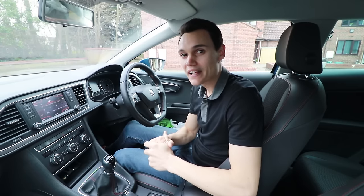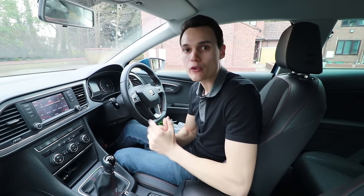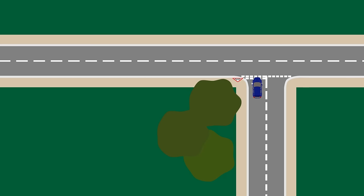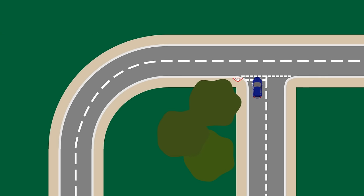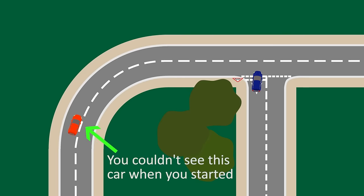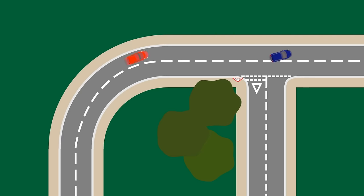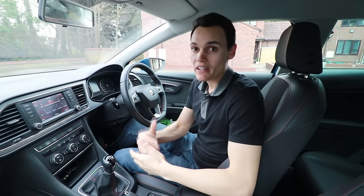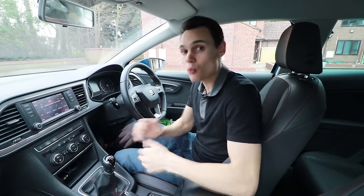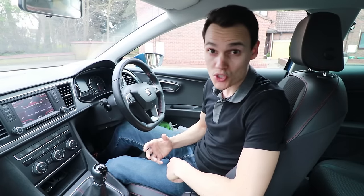For example, let's say you're at a T-junction with a sharp bend further down the road. You start to go because no one's coming, but after you start, someone comes flying around the bend really quickly and has to brake for you. Well, there's nothing you can do about that, so don't worry — the car just needs to slow down and you won't fail for that.